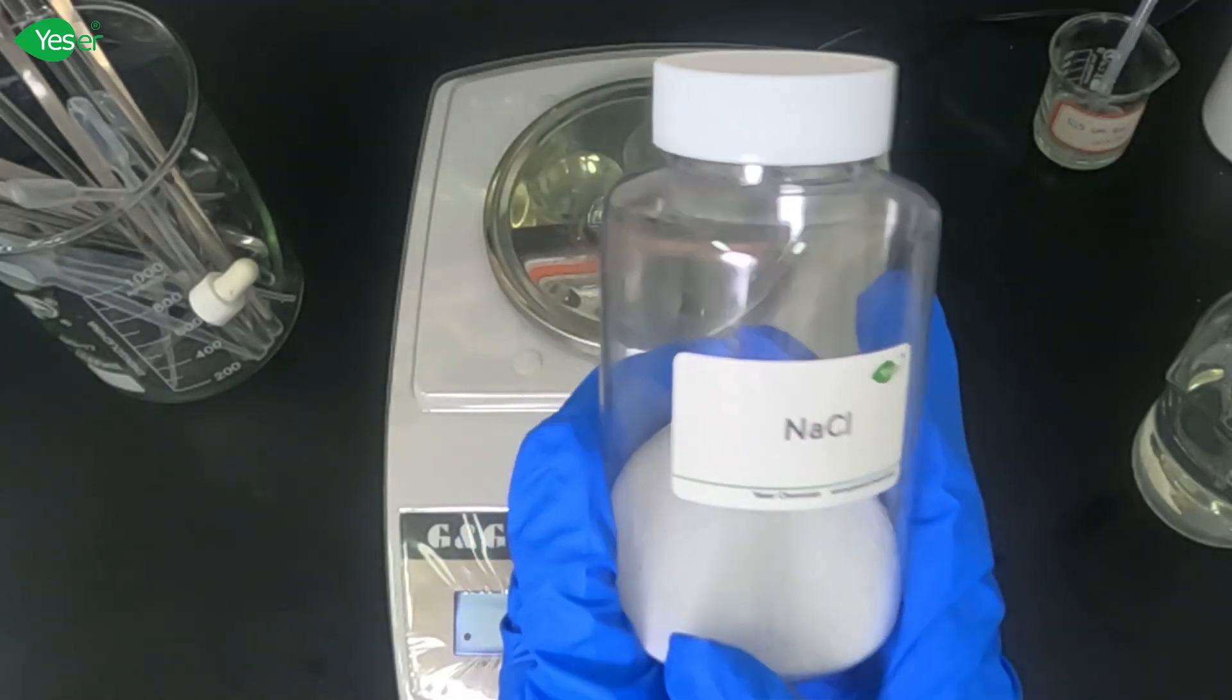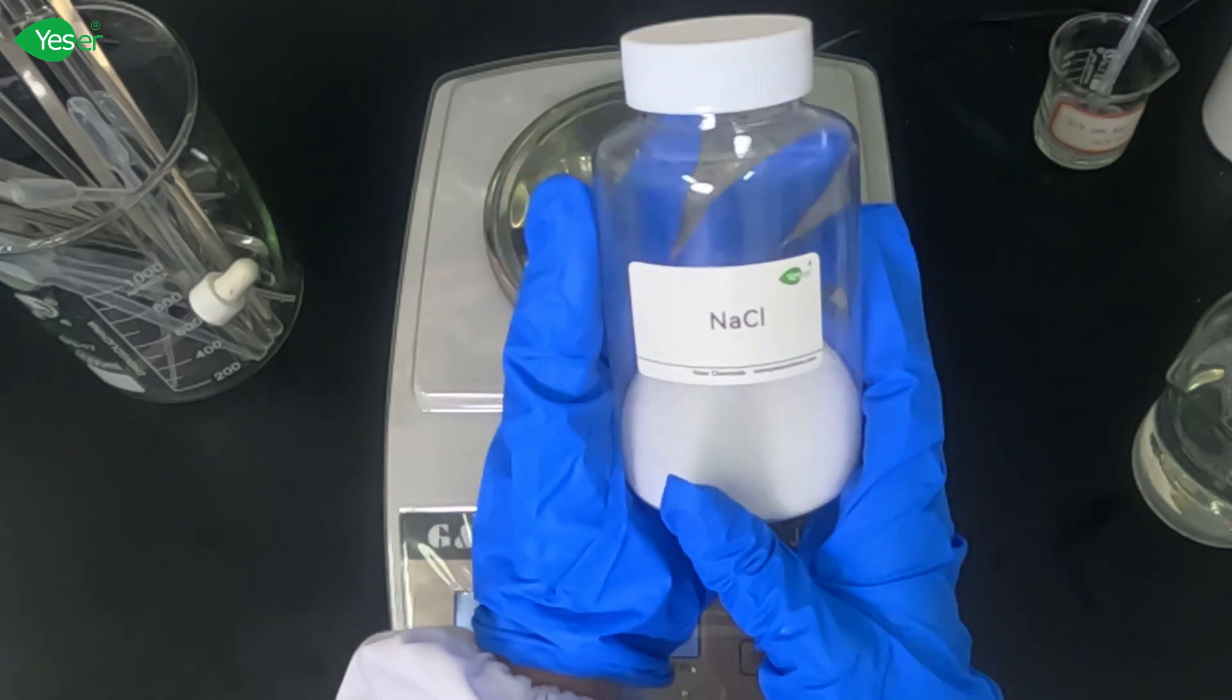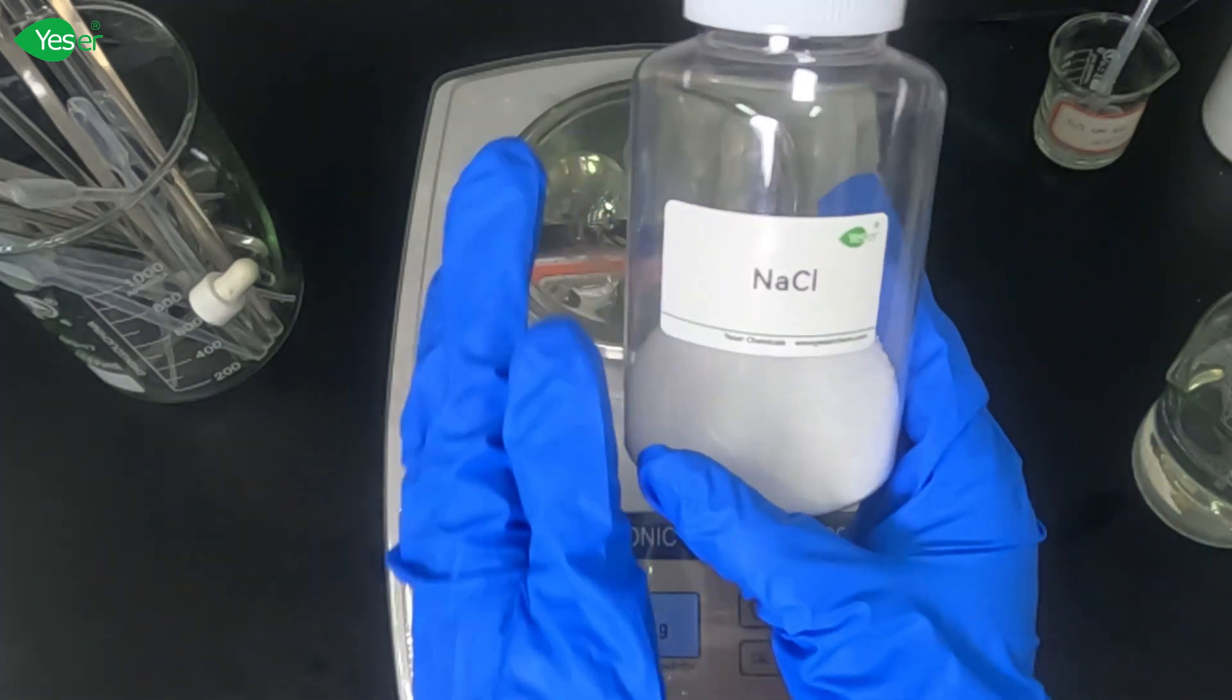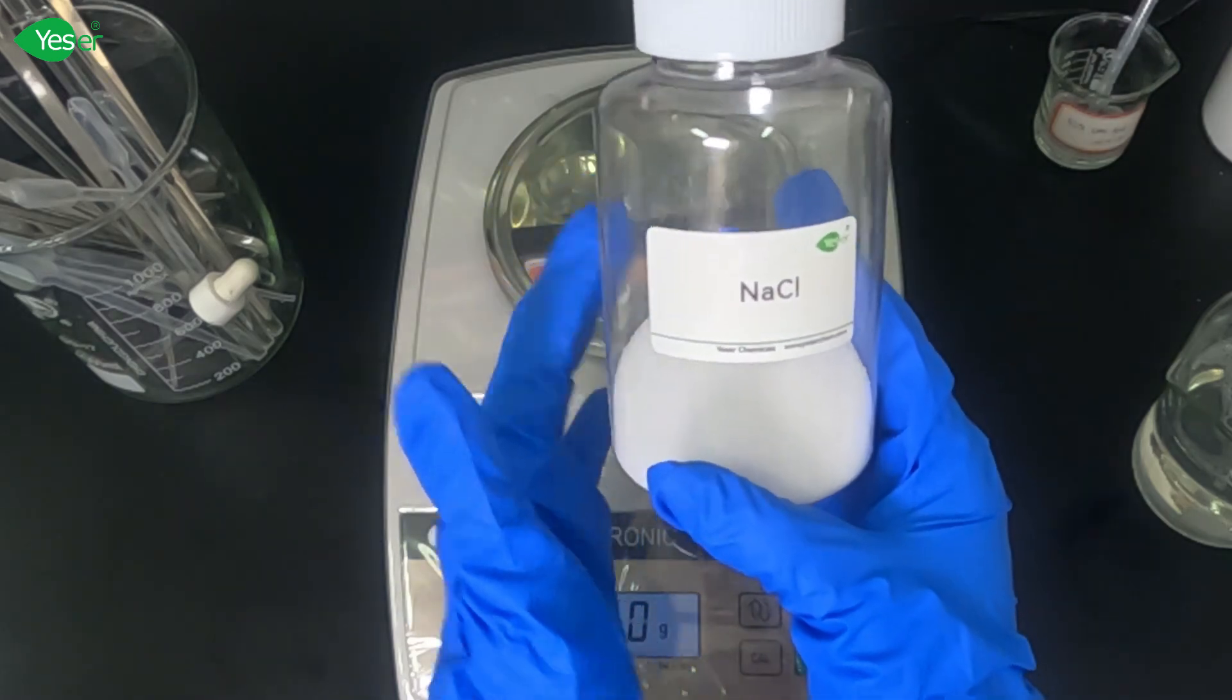For the final part of our formula, let's now add our thickener, which is sodium chloride. Gradually add 3 grams of this, or 1.5% for our formulation.